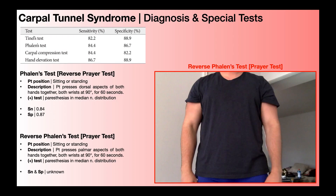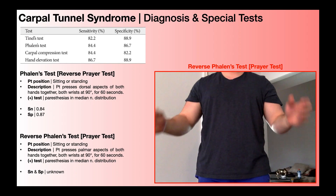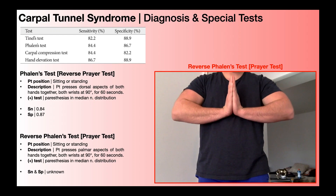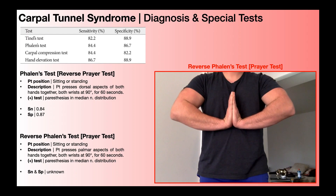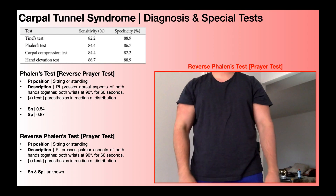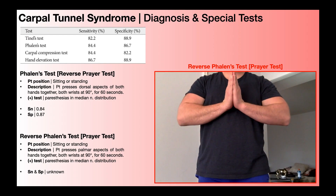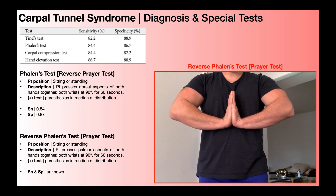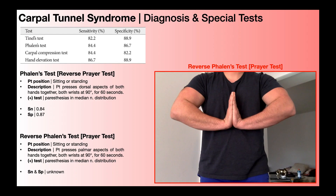The first two special tests are very similar: the phalen's test and reverse phalen's test. The phalen's test is also called the reverse prayer test, and the reverse phalen's test is also called the prayer test. We'll start by looking at the reverse phalen's test, which is the prayer test. The patient is either sitting or standing and presses the palmar aspects of both hands together with both wrists coming to at least 90 degrees, holding for 60 seconds. A positive test is reproduction of paresthesias at any point in the median nerve distribution — numbness, tingling, or burning shooting pain. The sensitivity and specificity of the reverse phalen's test have not been determined, so it's probably best to go with phalen's test.